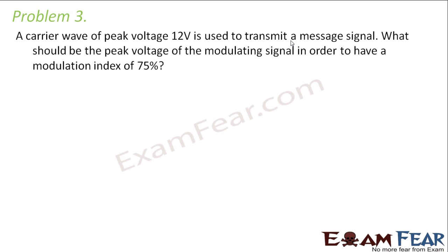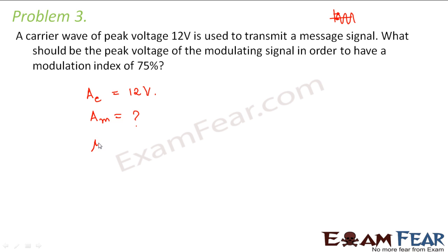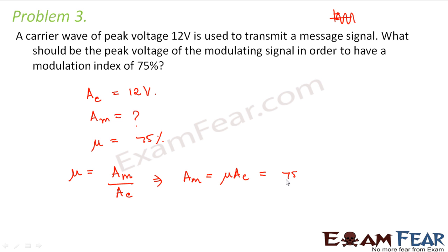A carrier wave of peak voltage 12 volts is used to transmit a message signal. When we talk about peak voltage, we are talking about the amplitude, so the amplitude of the carrier wave AC = 12 volts. What should be the peak voltage of the modulating signal in order to have a modulation index of 75%? Modulation index is the ratio of the amplitude of the modulating signal to the amplitude of the carrier wave. So AM = μ·AC = (75/100) × 12 = 9 volts. That should be the peak voltage of the modulating signal.